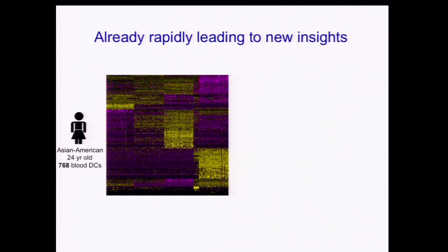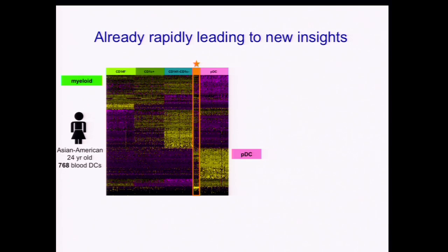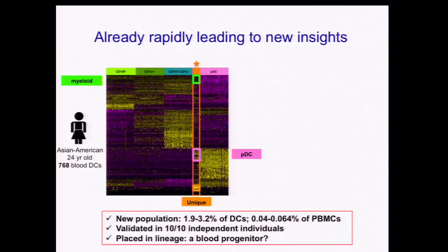These advances are already quickly leading to new insights. Here, for example, we're seeing profiles from roughly 800 dendritic cells isolated from the blood of an Asian American 24-year-old female. The vast majority of these cells allow us to identify completely from scratch all four known subtypes of dendritic cells in the blood. But there's also a small minority population — under 2% or so — that is quite distinct and can be identified with a unique signature. These cells are only 0.06% of peripheral blood mononuclear cells, but they are validated readily in 10 of 10 independent individuals. Looking at these profiles, we can actually infer their position in the lineage and identify them as the likely new blood precursor of human dendritic cells.